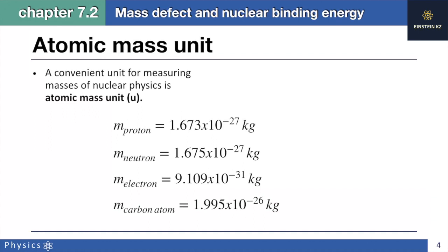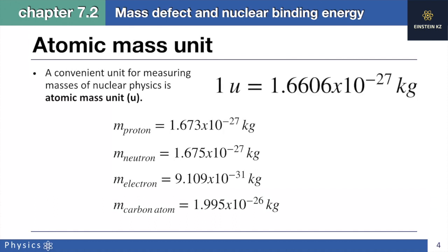The mass of carbon atom is 1.995 times 10 to the power of minus 26 kilograms. As you can see, these numbers are very small yet very difficult to pronounce because they are bulky. But if we use atomic mass units, which is equal to 1.66 times 10 to the power of minus 27 kilograms, it would be much easier to show the masses of atomic particles. For instance, the mass of a proton in atomic mass units is 1.00728 atomic mass units, and the mass of the neutron is similar.